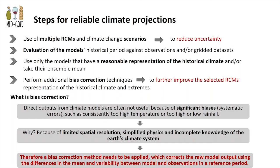We can perform additional bias correction techniques to further improve the regional climate models' representation of historical climate and extremes. The outputs from climate models are not directly useful because they have biases — they may simulate temperatures too high or rainfall too low — having significant biases relative to observations, because of limited spatial resolution, incomplete physics, and insufficient knowledge of the Earth's climate system. We therefore apply a bias correction method that corrects the raw model output using the differences in mean and variability between model and observations during the historical period.